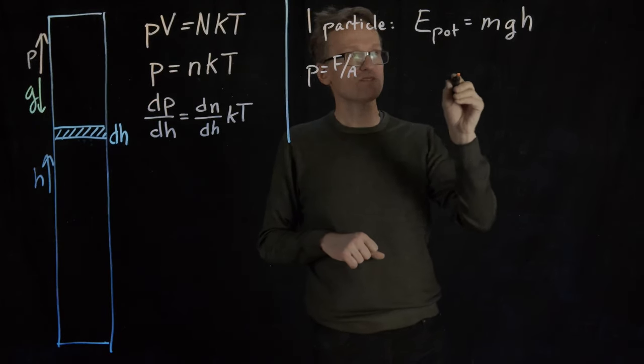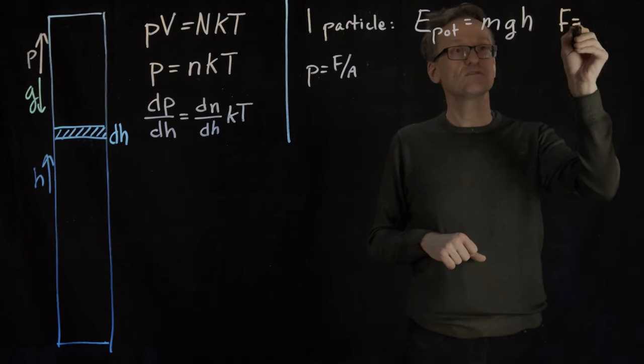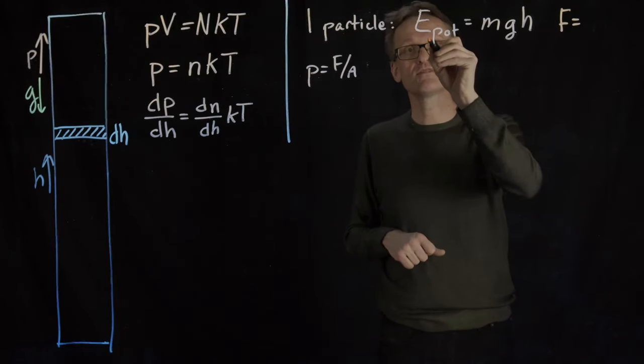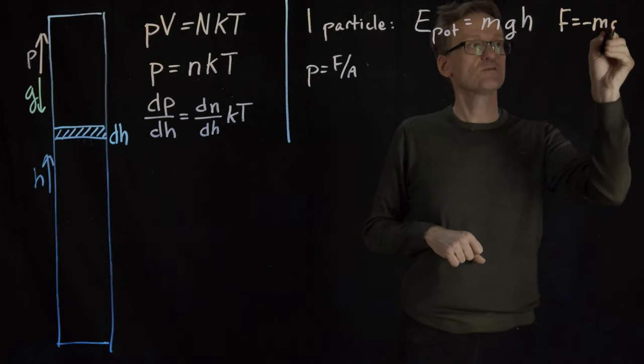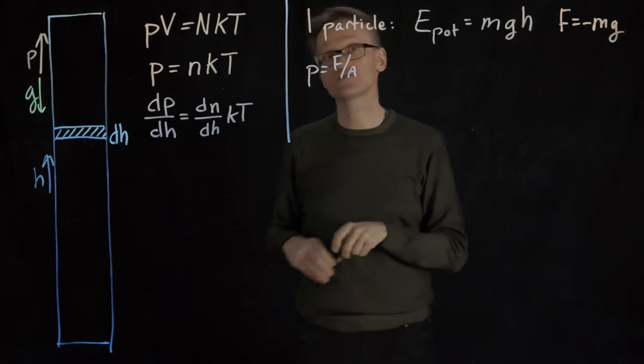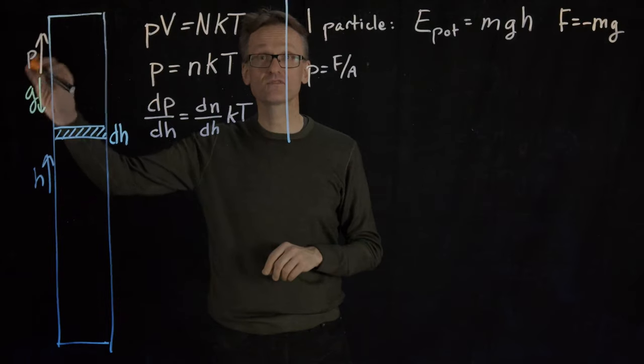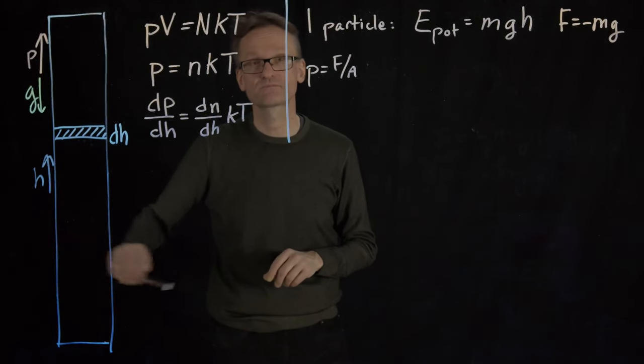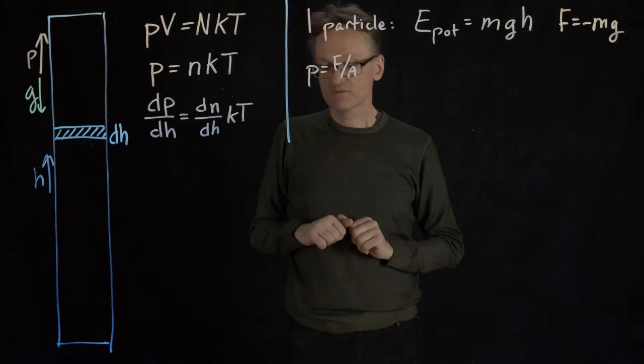The force on one atom, I'll write that first. The force on one atom is minus the derivative of the potential energy. So the force of one atom would be minus mg. The reason for that minus sign has to do with the direction of the coordinate axis. The coordinate axis is pointing up so the force is pointing down.